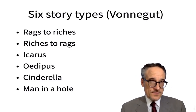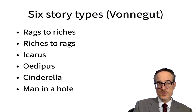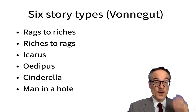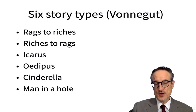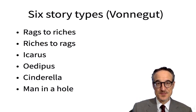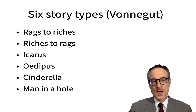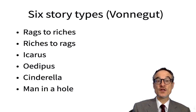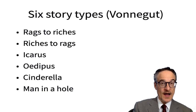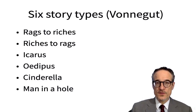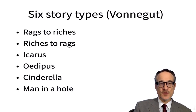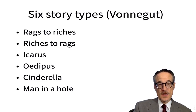Different writers have looked at different stories and come up with types of stories. Kurt Vonnegut, an American science fiction writer, came up with six different types of stories. When he was a university student, he wrote this as his thesis — and it was rejected. More recently, several thousand stories have been put into a computer and analyzed to find what kinds of stories they are, and they almost all follow one of these six types: rags to riches, riches to rags, Icarus, Oedipus, Cinderella, and A Man in a Hole.